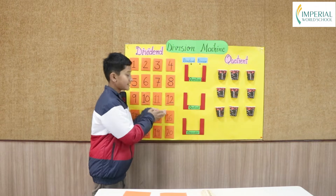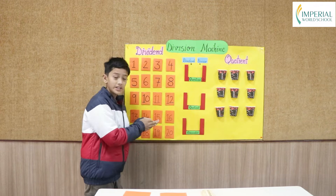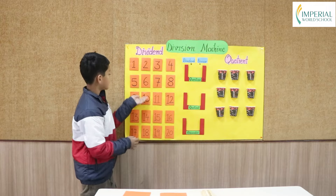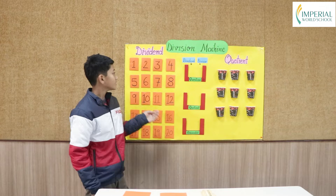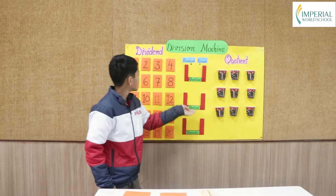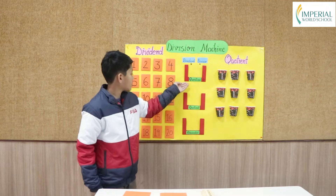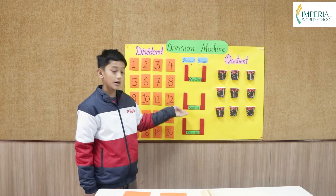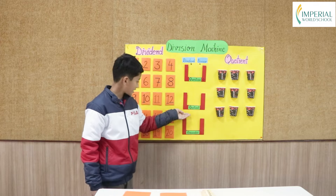So this is a division machine. This is the dividend pouches. This is the divisor pouches — this is where we put the divisors. This is where we put the quotient.